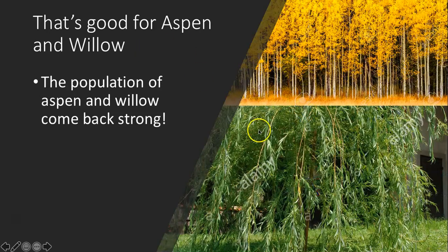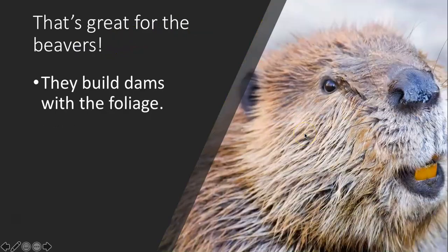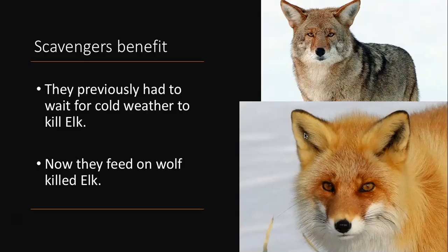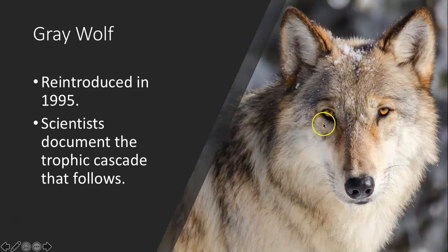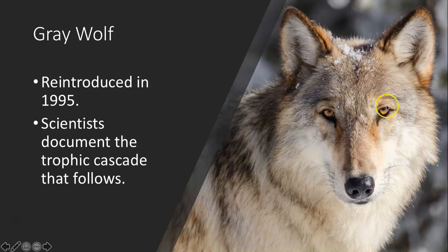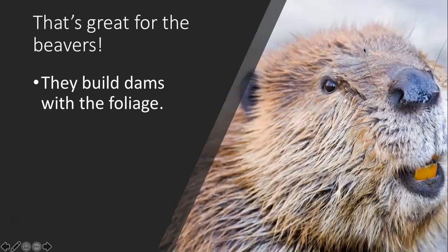Another effect of aspen and willow returning was that more songbirds came back. Songbirds affect seed distribution — when they eat seeds, they can carry them elsewhere and affect the ecosystem. When a single population like the gray wolf is removed and causes this entire trophic cascade where everything goes wrong, we call these organisms a keystone species — a single organism that can have a massive effect on the ecosystem. It's actually said that wolves can change the direction of rivers, because removing them affects the beavers, which in turn changes river flow.